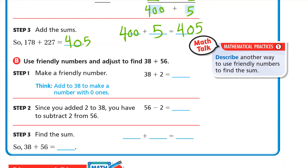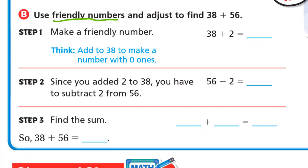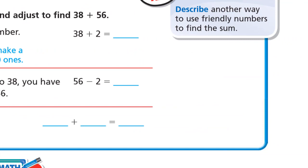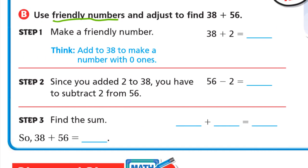Another way is using friendly numbers. Friendly numbers are numbers with a zero in ones. Like the 30, the 40, the 80, the 200. All of these numbers has zero in the ones place. So here we need to add the 38 plus 56 using friendly number. First step number one, make a friendly number. So think, add to 38 to make a number with zero ones. So 38, after 38, 39, 40. And 40 has zero in ones. So we add 2, we will get 40. So 38 plus 2 is 40.